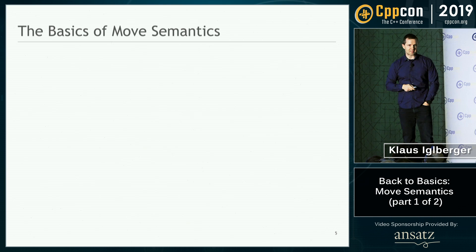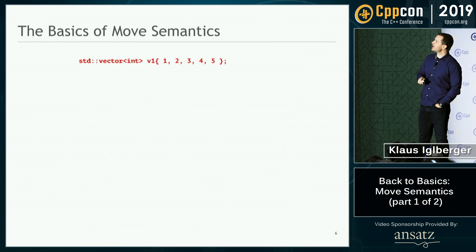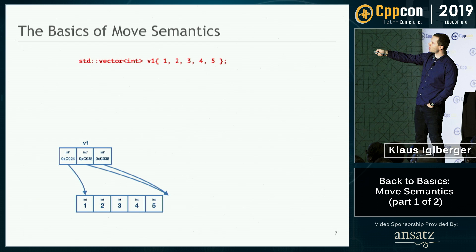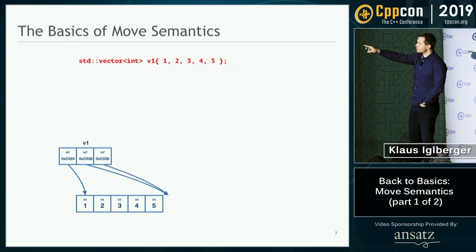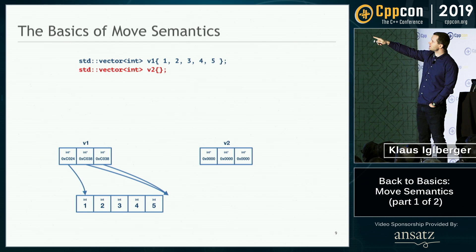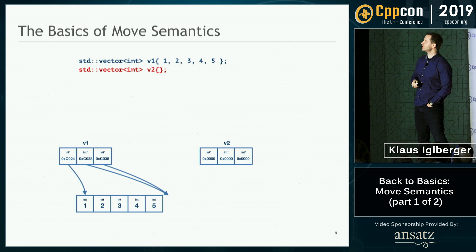Let's first motivate this. Let's go to the real basics. Let's imagine we have a vector of integers. This vector would be represented like this: the vector itself, the static part, is just three pointers to int — a couple of addresses. And then there's the dynamic part — one, two, three, four, five — somewhere on the heap or free store. Now I have a second vector, v2. It's empty at this point — just the stack part, all the pointers zeroed out.